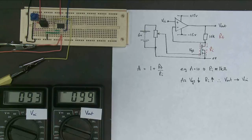They're pretty close to being the same, so the gain of the amplifier is pretty close to 1, as I change the input voltage around. So the amplifier's gain is 1.